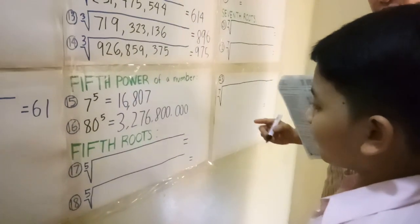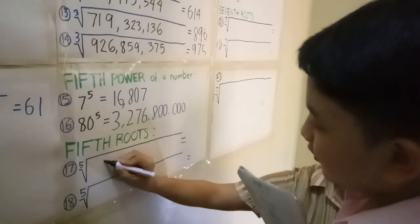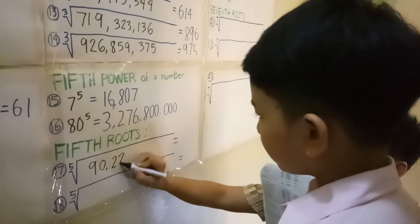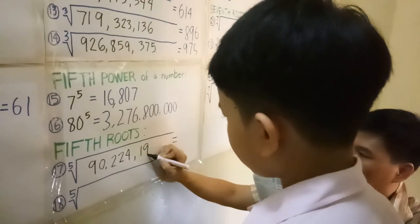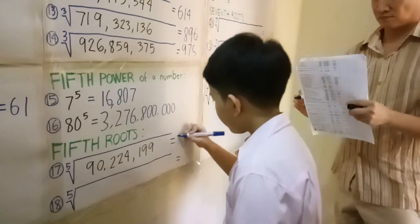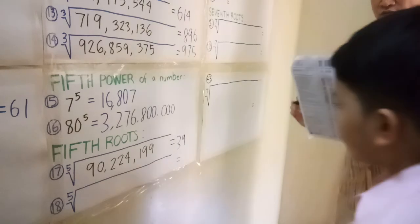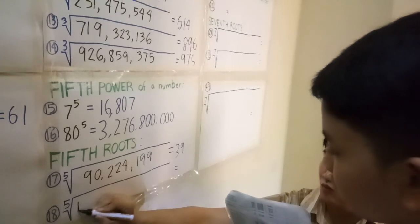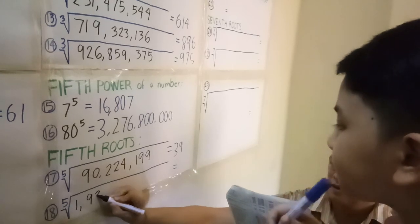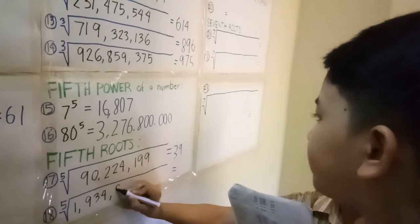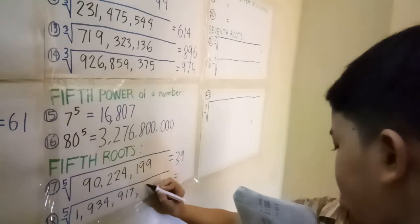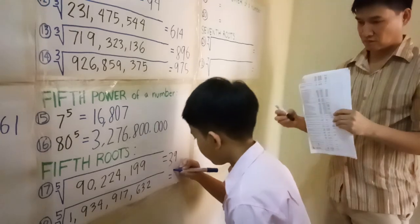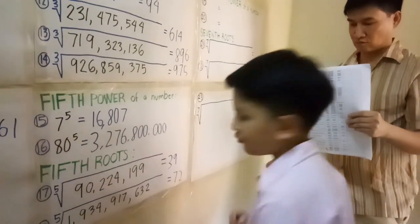Good job! We proceed to 5th roots. What's the 5th root of 90,224,199? 39. Bravo! What's the 5th root of 1,934,917,632? 72. Bravo!